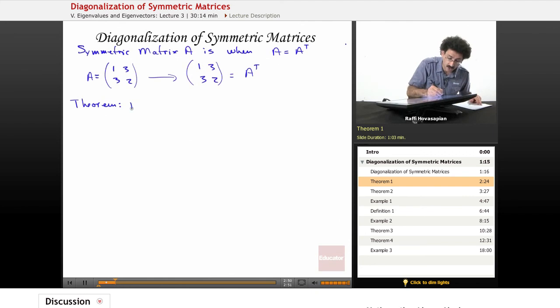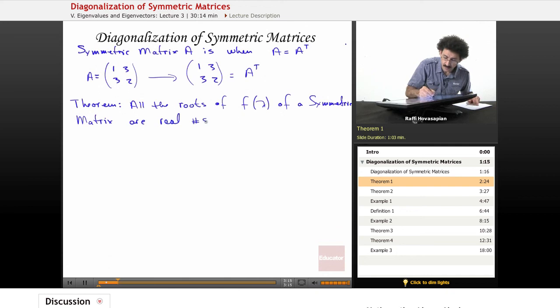Well, as it turns out that all the roots of what we say F of lambda, which is the characteristic polynomial lambda of a symmetric matrix are real numbers. So as it turns out, if our matrix happens to be symmetric, we know automatically from this theorem that all of the roots are going to be real. So there's always going to be a real eigenvalue.